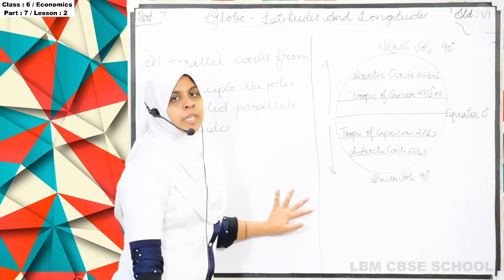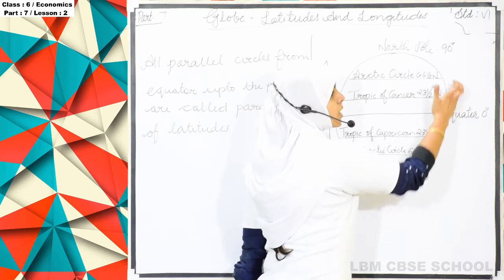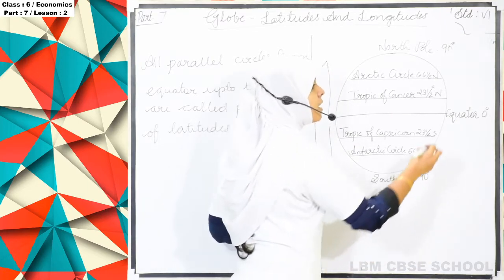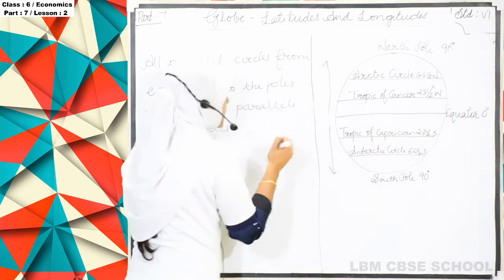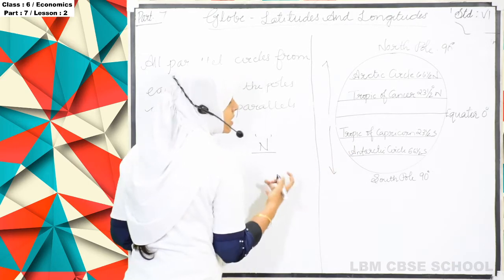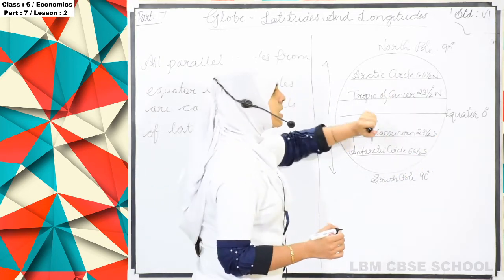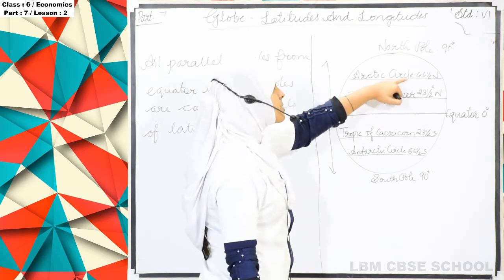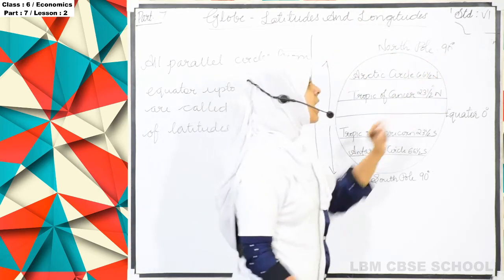Now we will study the important latitudes. Above the equator is considered north, and we write those latitudes with the initial N. The first important latitude above the equator is the Tropic of Cancer at 23.5 degrees north. After that comes the Arctic Circle, and then the North Pole at 90 degrees north.